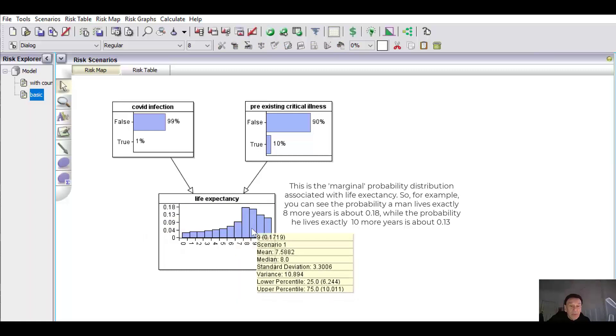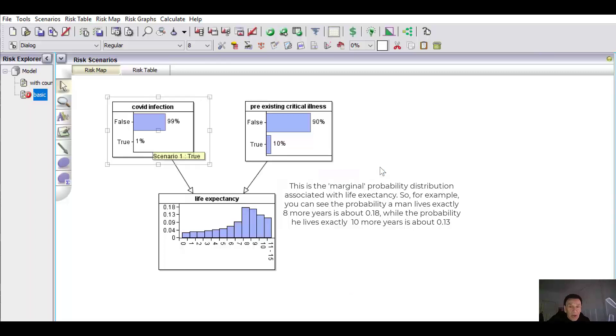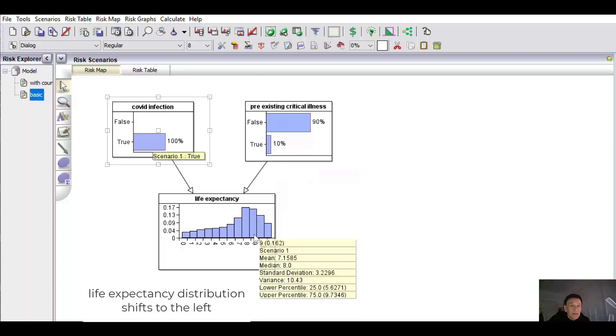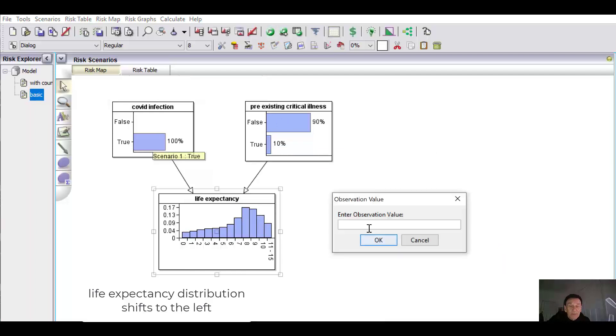So in the real world, when we look at this, the median life expectancy of an average 82 year old is eight years. But if we know that a person contracts Covid, then that goes down. And if we know that they die,